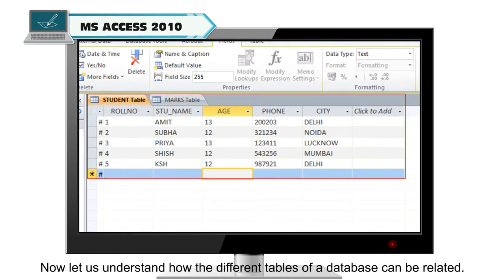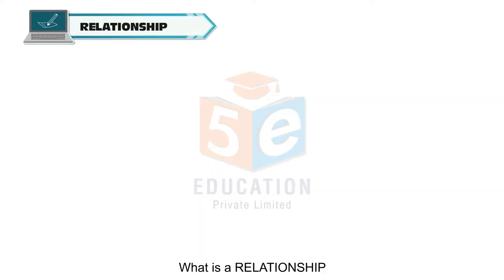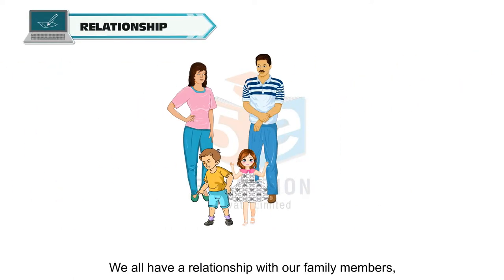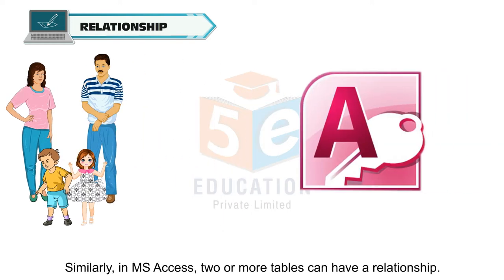Let us understand how the different tables of a database can be related. What is a relationship? We all have a relationship with our family members like father, mother, son, daughter, brother, sister, etc. Similarly, in MS Access, two or more tables can have a relationship.